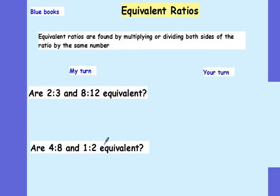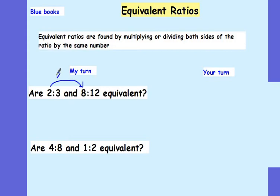I'm going to go through a couple of examples, and then you're going to do some examples in your dark blue books. So pens down, eyes on me for a minute. I've asked, are 2 to 3 and 8 to 12 equivalent? Let's work it out. Can I multiply both 2 and 3 by the same number to give me 8 and 12? Well, 2 times 4 will give me 8, and 3 times 4 will give me 12. I've multiplied both numbers by the same number, 4, so yes, those two ratios are equivalent.